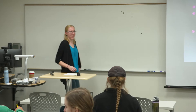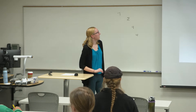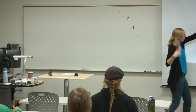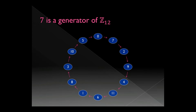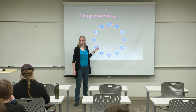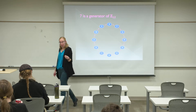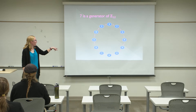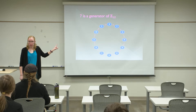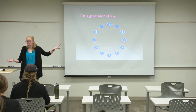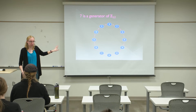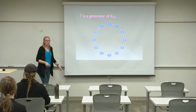Here's what we got. We did the first few together: 7, 2, 9, 4 — then keep adding 7: 11, 6, 1, 8, 3, 10, 5, 0, 7, and then we keep going. The thing to observe is that we got all of the numbers in Z12 — not in the order we're used to seeing them, but they're all there. So 7 is a generator of Z12.